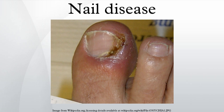Onychia is an inflammation of the nail folds with formation of pus and shedding of the nail. Onychia results from the introduction of microscopic pathogens through small wounds. Onychocryptosis, commonly known as ingrown nails, can affect either the fingers or the toes. In this condition, the nail cuts into one or both sides of the nail bed, resulting in inflammation and possibly infection.